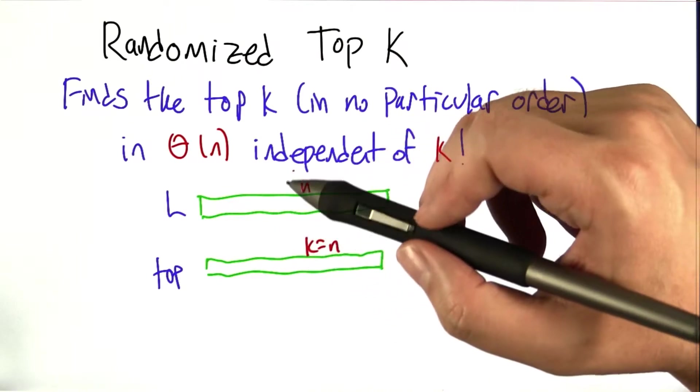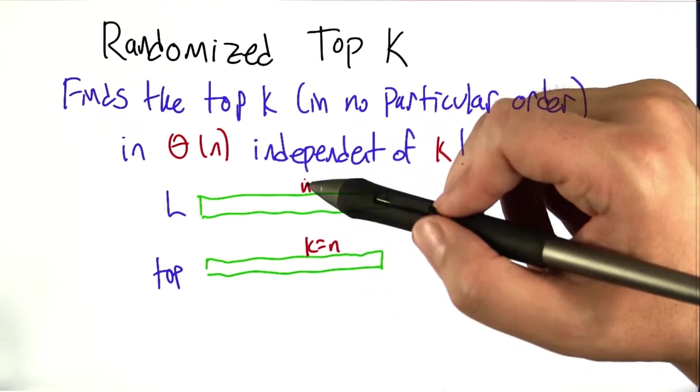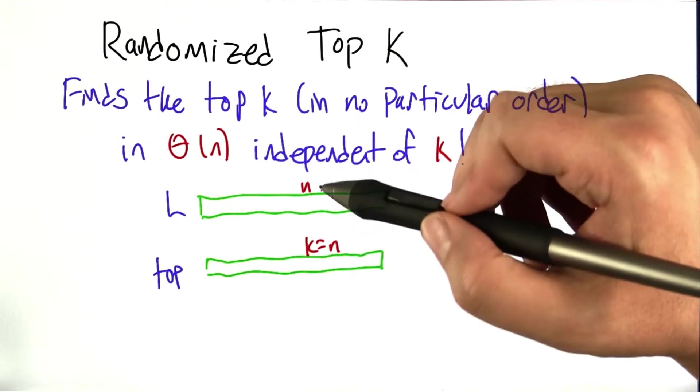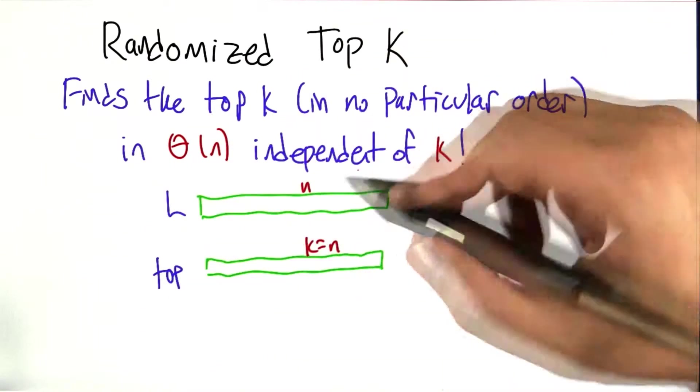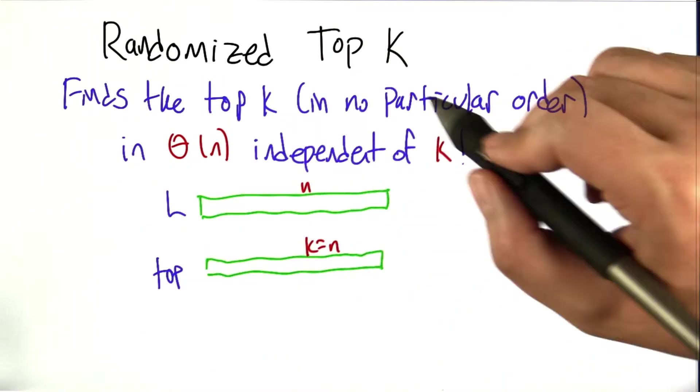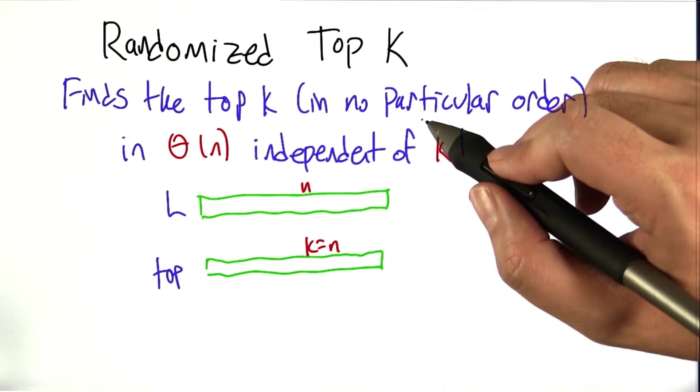So basically, if you ask me to find the top 100 elements in a list of length 100, I don't have to do anything, right? I can just give you back the original list even if it's not sorted. The top 100 is exactly these elements, this is what you asked for. So that's why this is not actually equivalent to sorting, it can be actually much more efficient than sorting.